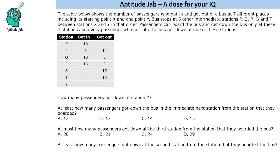Welcome to Aptitude Jab. This is a set based on optimization. We are given a table that shows the number of passengers who got in and got out of a bus at seven different places, including its starting point X and the end point Y. The bus stops at five intermediate stations P, Q, R, S, and T — this is the order in which the bus stops. Passengers can board and get down only at these stations.